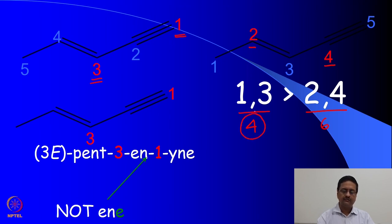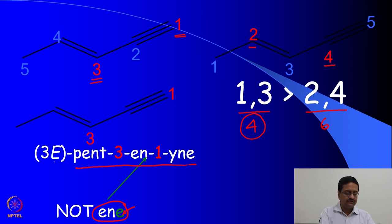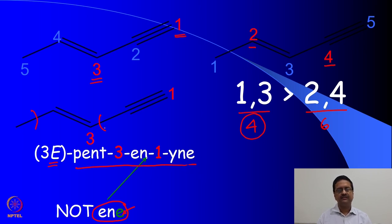We write the name of this compound as pent-3-en-1-yne. Notice that when designating the double bond we write only 'en', dropping the extra 'e'. The double bond is identified as E — that is, the two groups are on opposite sides of the double bond, making it trans, which we write as E.